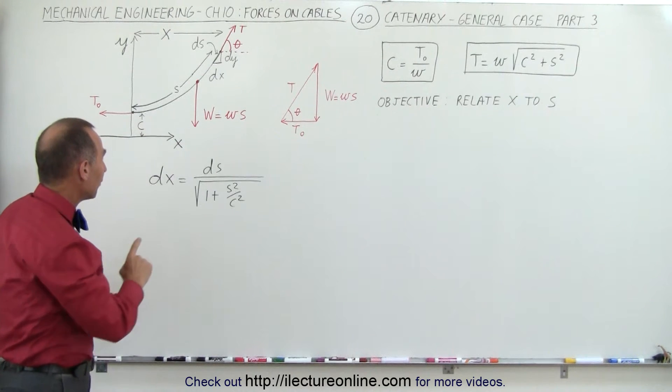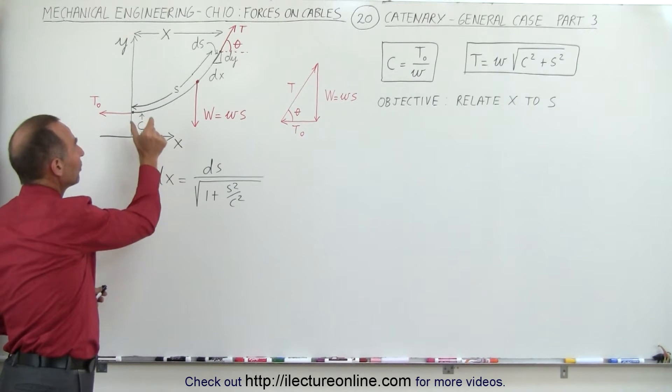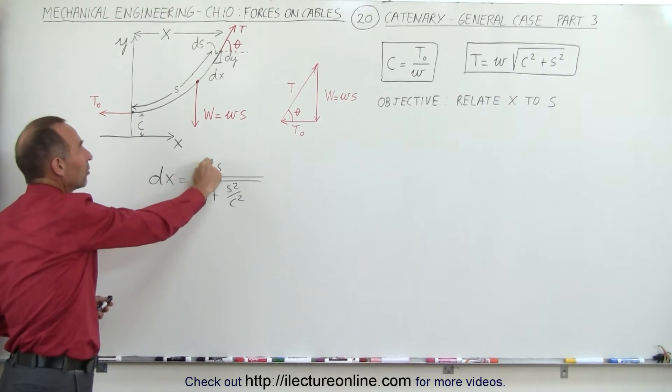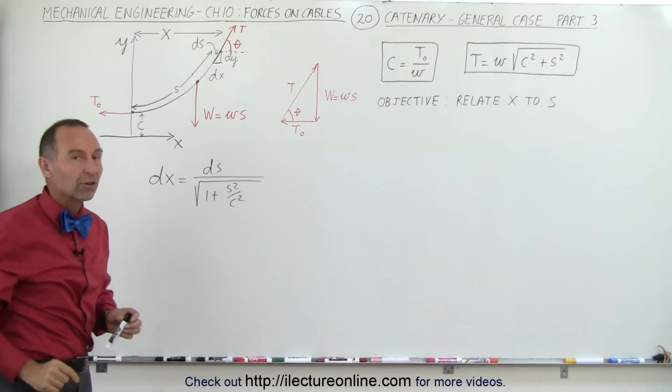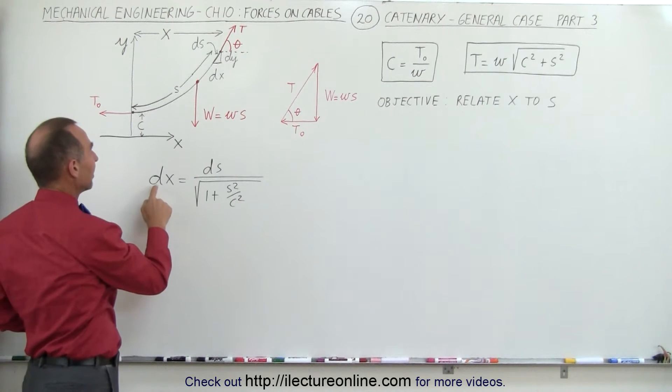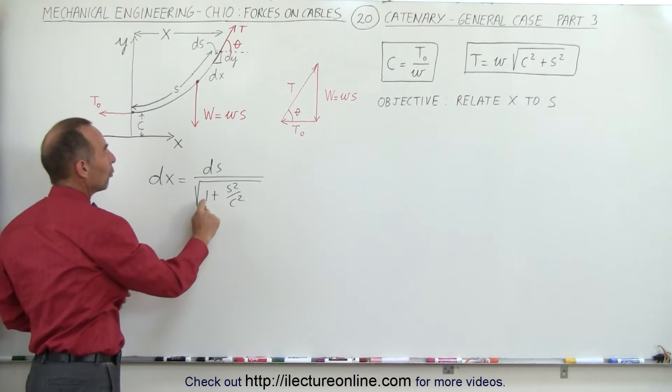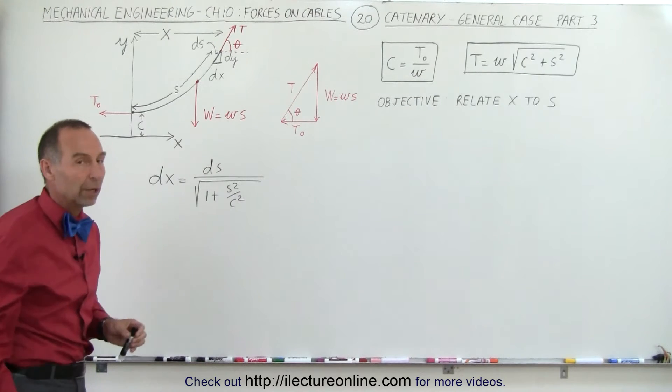And then we also discovered the relationship between a small difference in the x direction and a small difference along the direction of the cable. We can see that dx was equal to ds divided by the square root of 1 plus s squared over c squared.